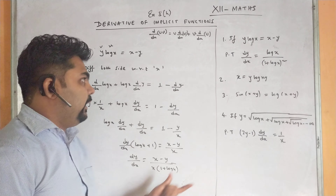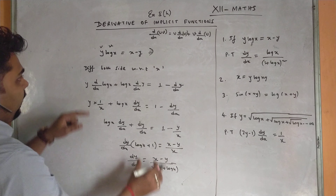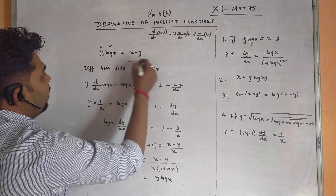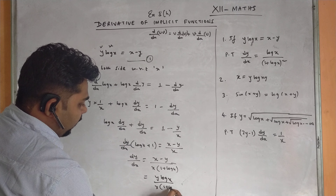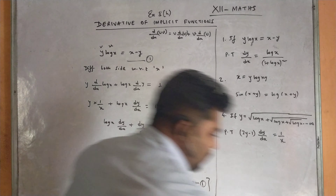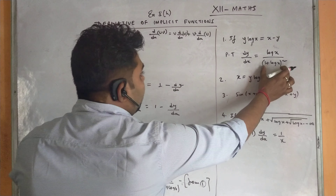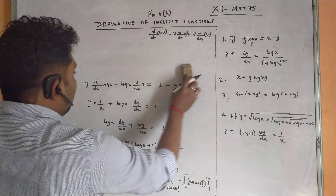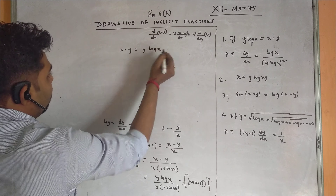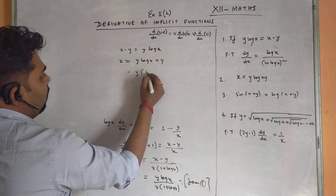We got the dy/dx term but it doesn't match the right-hand side, so we need substitution. From the given equation, x - y = y·log x (equation 1). Substituting: dy/dx = y·log x / [x·(1 + log x)]. Also from equation 1, x = y·log x + y = y·(1 + log x), so x = y·(1 + log x) (equation 2).